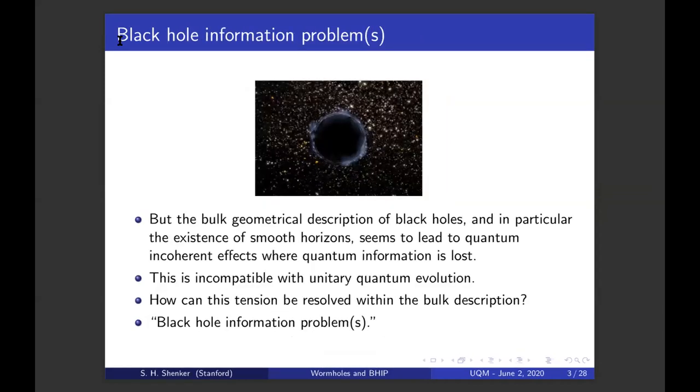But the bulk geometrical description of black holes, and in particular, the existence of smooth horizons, seems to lead to quantum incoherent effects where quantum information is lost. This is incompatible with unitary quantum evolution, which of course preserves quantum information. And so the question is, how can this tension be resolved, not on the boundary side where we understand it, but on the bulk side where we use geometry and gravity? This kind of problem is referred to as a black hole information problem.